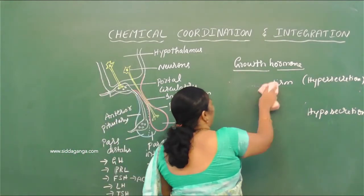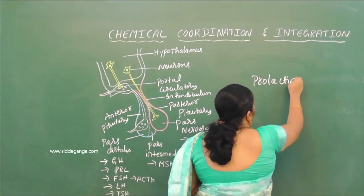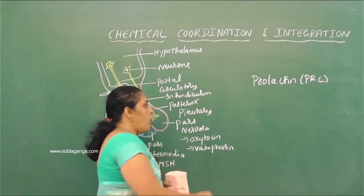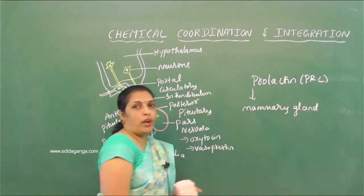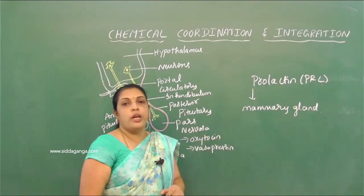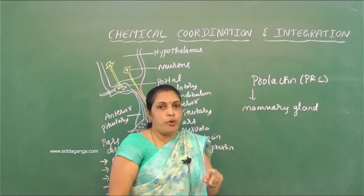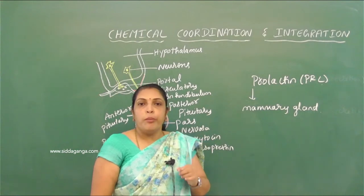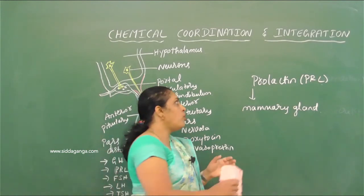Next is prolactin hormone. Prolactin hormone is also called mammotropic hormone or lactogenic hormone. This prolactin hormone acts on mammary glands in females. It helps in differentiation of mammary cells in the mammary gland and also helps in secretion of milk. That is why it is also called lactogenic hormone. Its function is seen mainly in females during the lactation period to nourish their young ones.